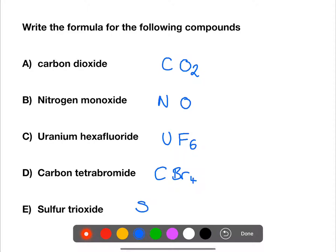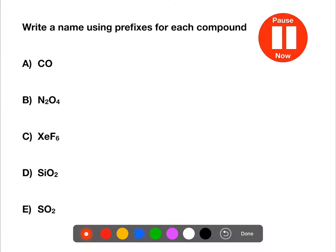And then lastly we have sulfur trioxide: S for sulfur, O for oxygen, and a three for the tri of the trioxide. Let's try going the other way. See if you can use the prefixes to give names to each of these compounds. Pause the video now.